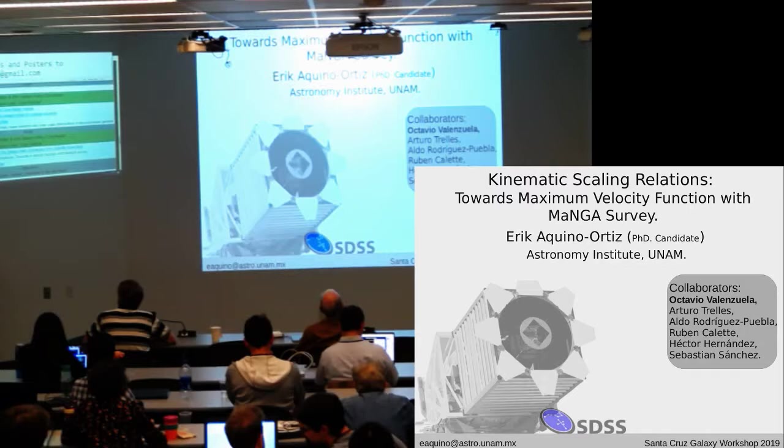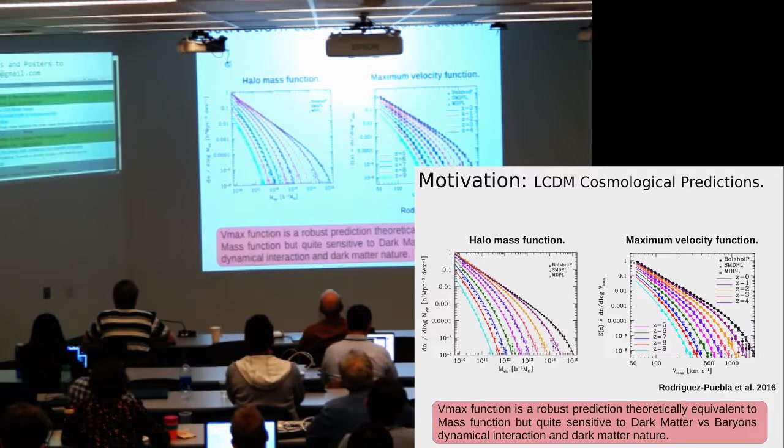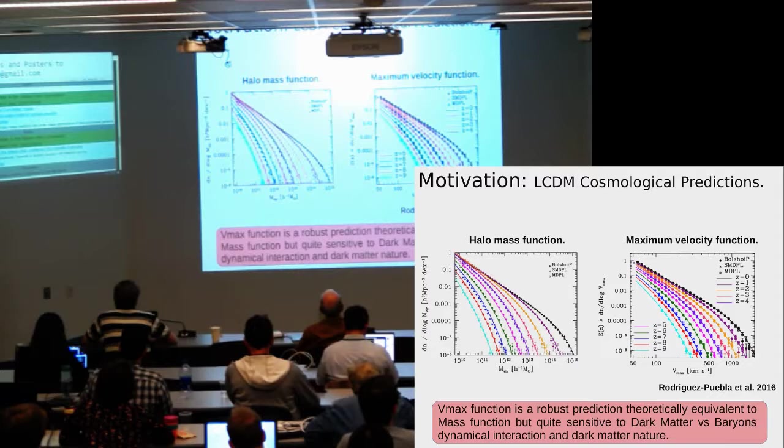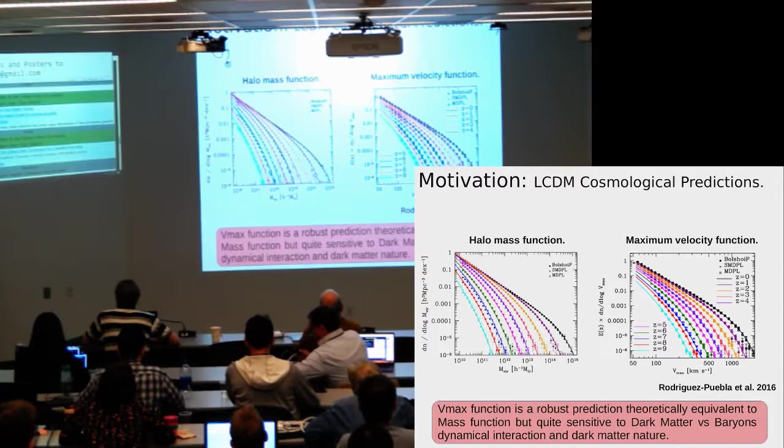The motivation is that in the Lambda CDM cosmological model, there are very robust predictions. For example, the halo mass function for different redshift ranges, which can be translated to the maximum velocity function also for different redshift ranges. This velocity function is quite sensitive to the interaction between the dark matter and the baryonic dynamics.